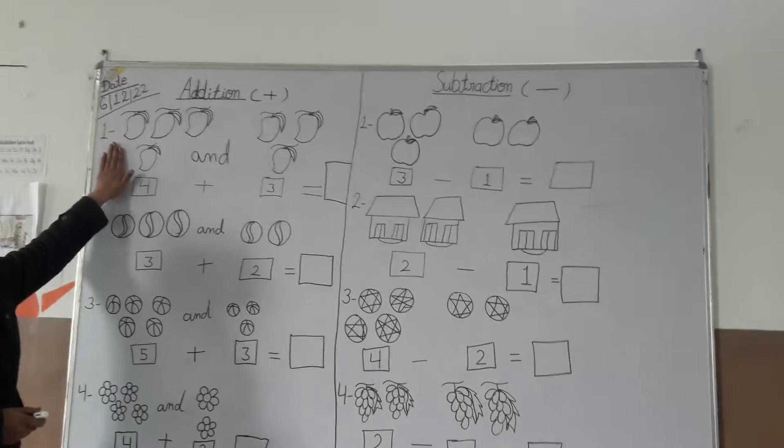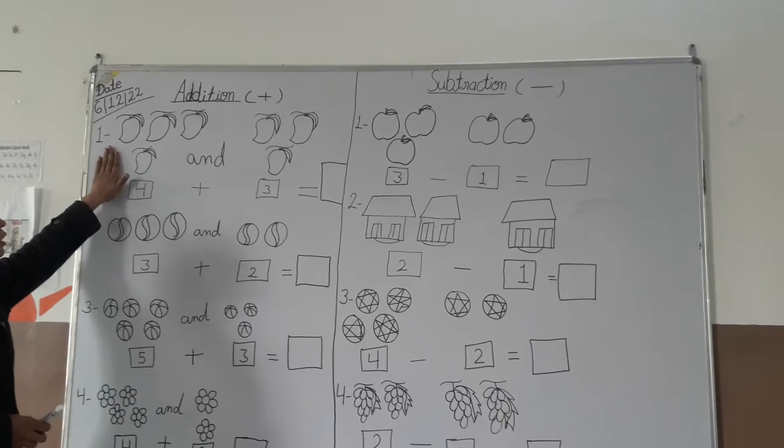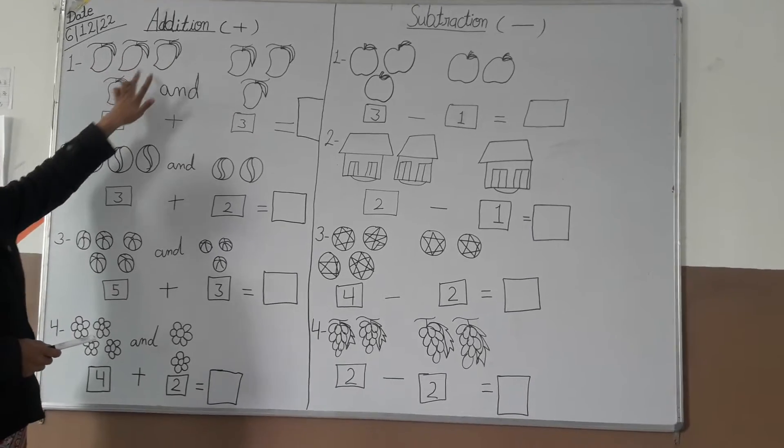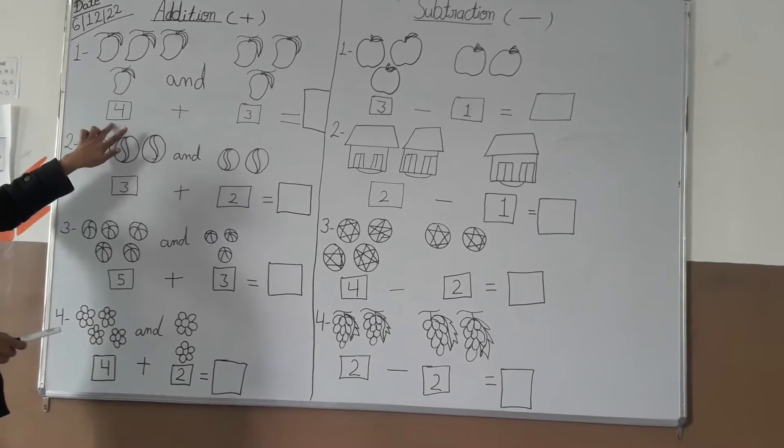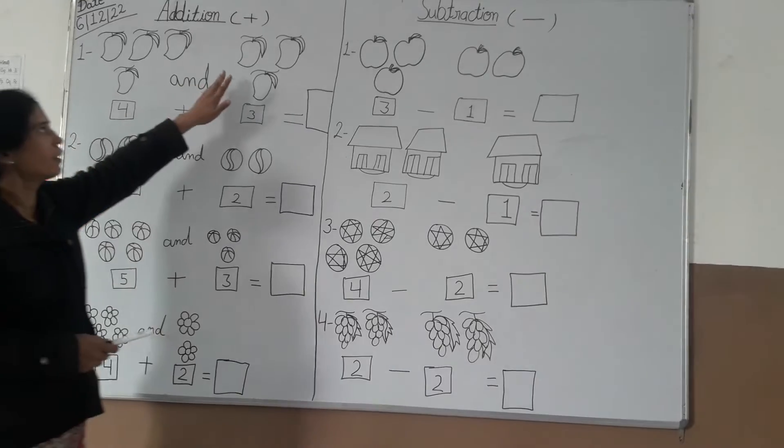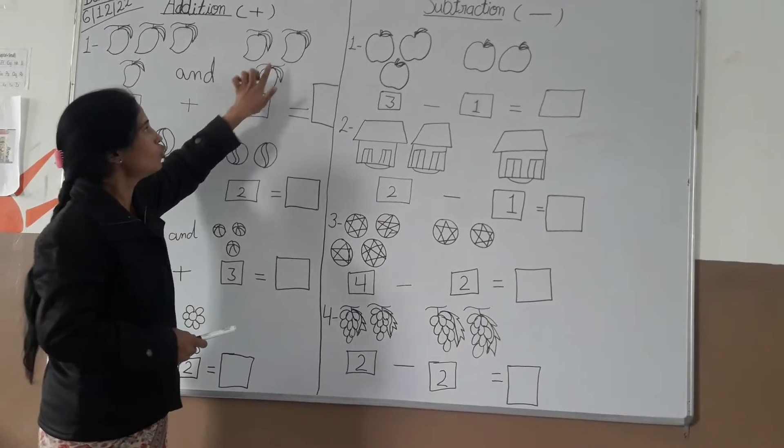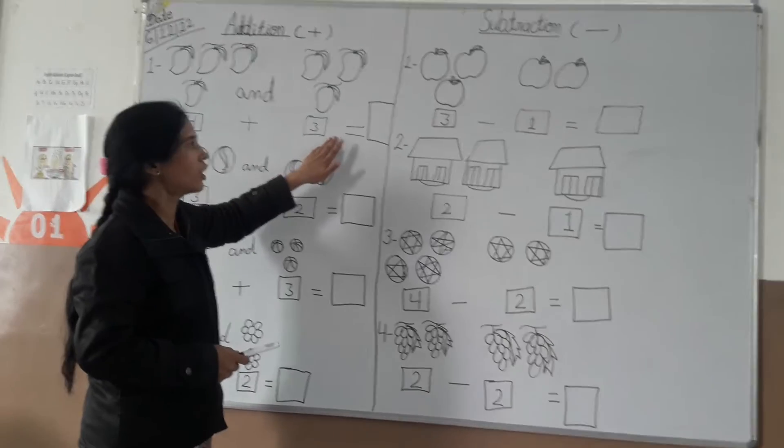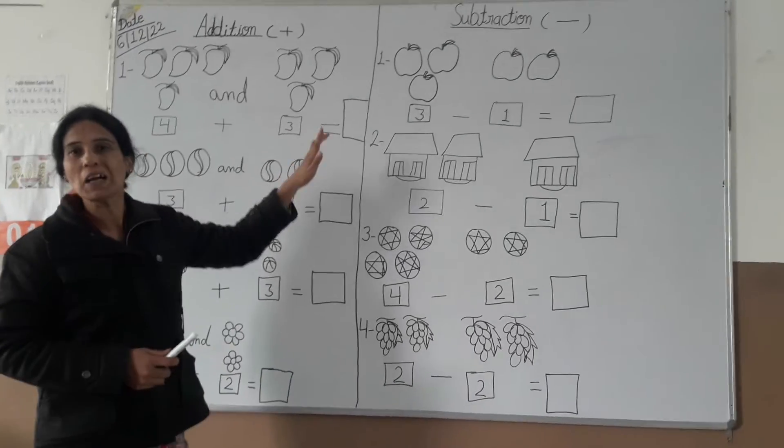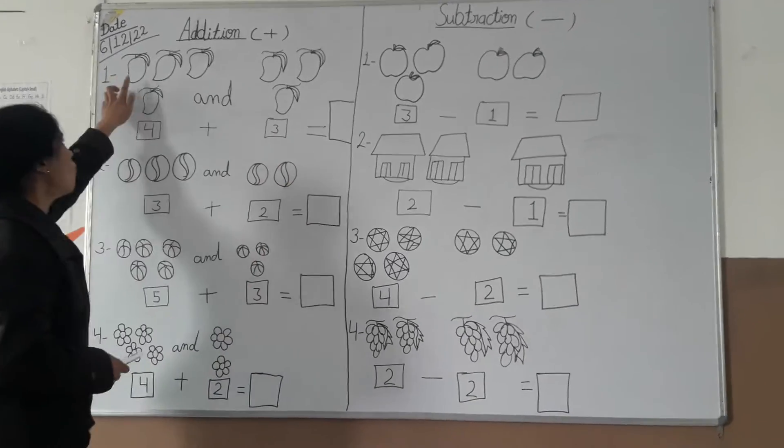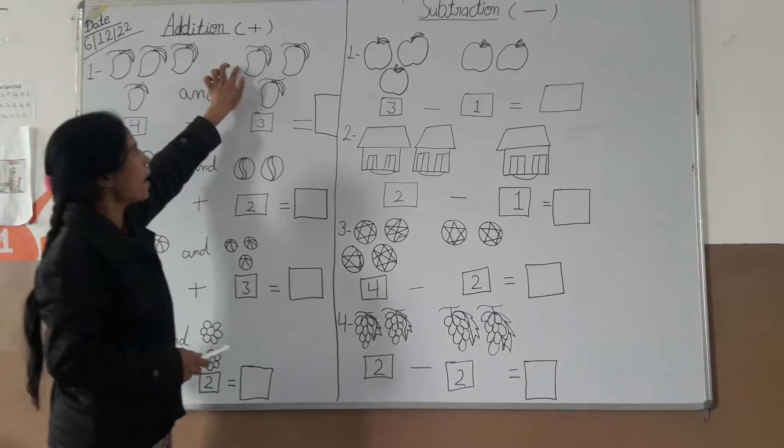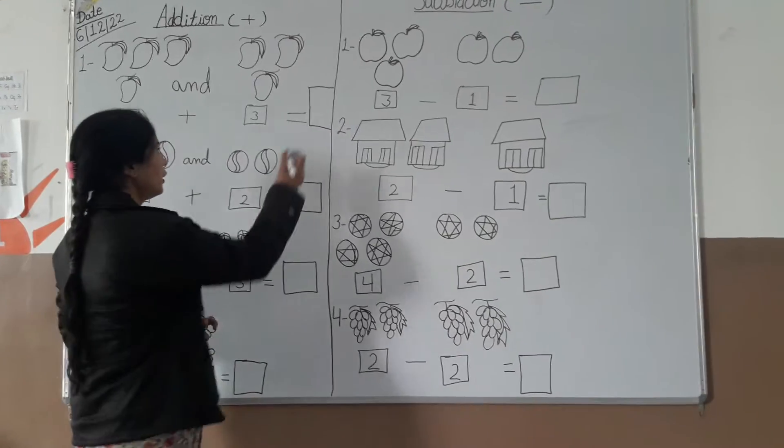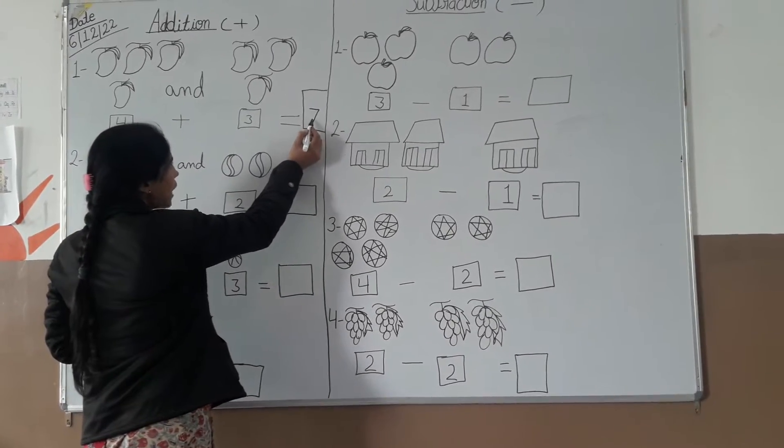What is this? Mangoes. Counting: one, two, three, four. Four. Next: one, two, three. Three. Four plus three. Counting all together: one, two, three, four, five, six, seven. Write it: seven.